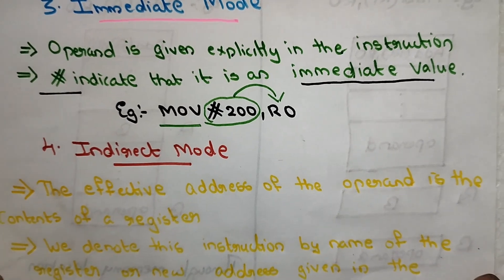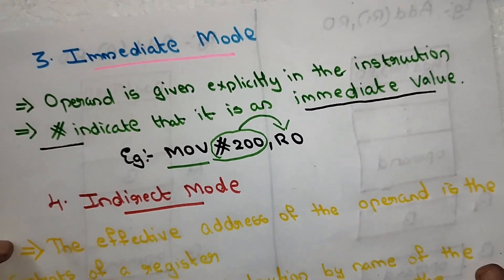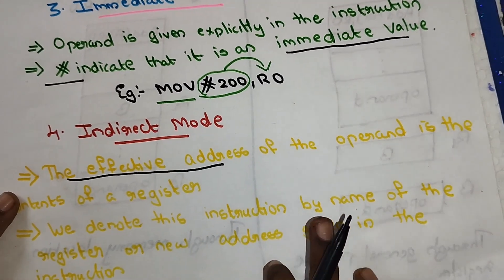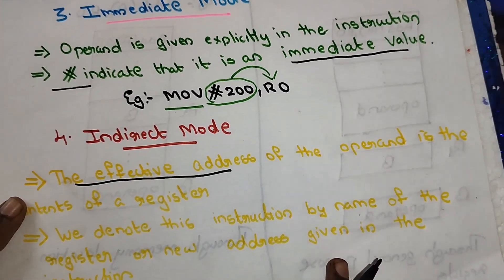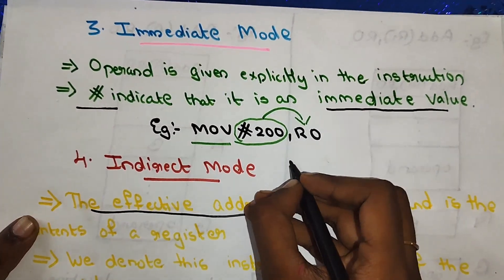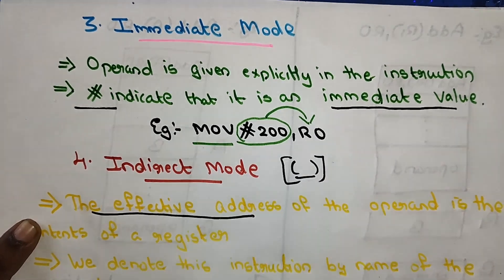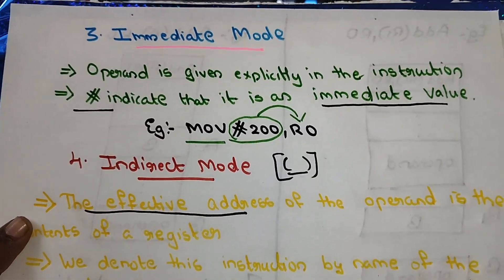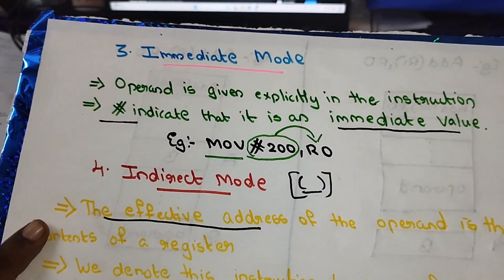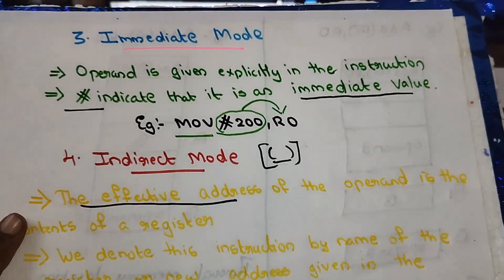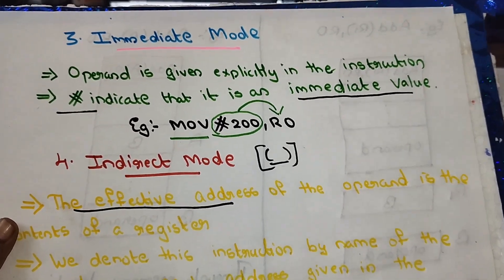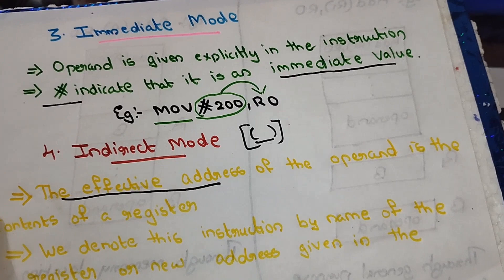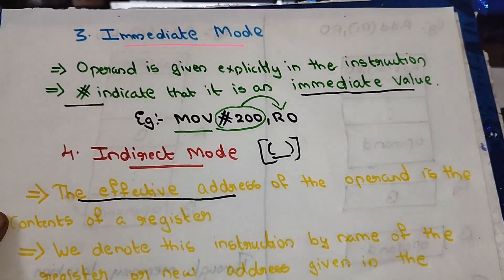The next mode is indirect addressing mode. In indirect mode, the effective address of the operand is the content of a register. We denote this instruction by the name of the register enclosed in parentheses (brackets). The parentheses indicate indirect mode.